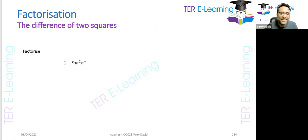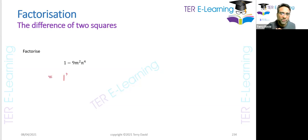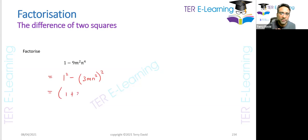Let's factorize 1 minus 9m squared n squared. Again, two terms separated by a minus sign and each term is a square variable. I can write this as 1 squared minus (3mn) squared. So this can be written as (1 plus 3mn squared)(1 minus 3mn squared). We've just factorized this using the difference of two squares.